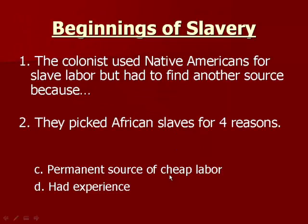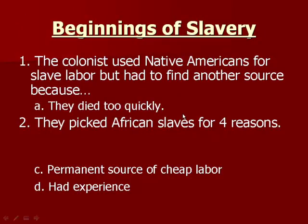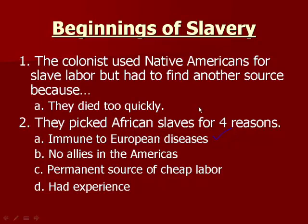Another negative effect of the Columbian Exchange is slavery. The colonists used Native Americans for slave labor, but had to find another source because Native Americans were dying too quickly from diseases. They chose African slaves for four reasons: one, they are immune to European diseases; two, they have no allies in the Americas; three, it is a permanent source of cheap labor since the slave trade is thriving; and four, they already have experience on sugar plantations in Europe.